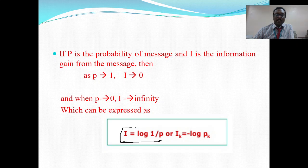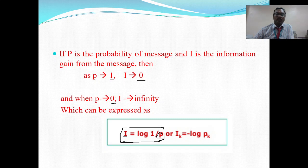Probability is inversely proportionate to information: less probable means more information, and high probable means less information. If I substitute P equal to 1, log(1/1) = log(1) = 0, so information I equals 0 — very less information. If the probability is very very less, close to 0, say 0.1 or 0.005, substituting near 0 in the denominator gives very very high information — I is infinite for very small P. This equation can also be expressed in another form as I = minus log(Pk).